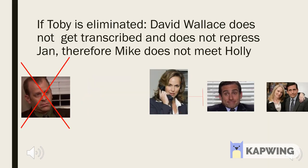In this single mutation, we see a change in the outcome of the show: if Toby is eliminated, David does not get the information that Jan is a bad boss and therefore doesn't fire her. She is able to stay in a relationship with Mike and acts as a repressor for him, and he does not marry Holly.